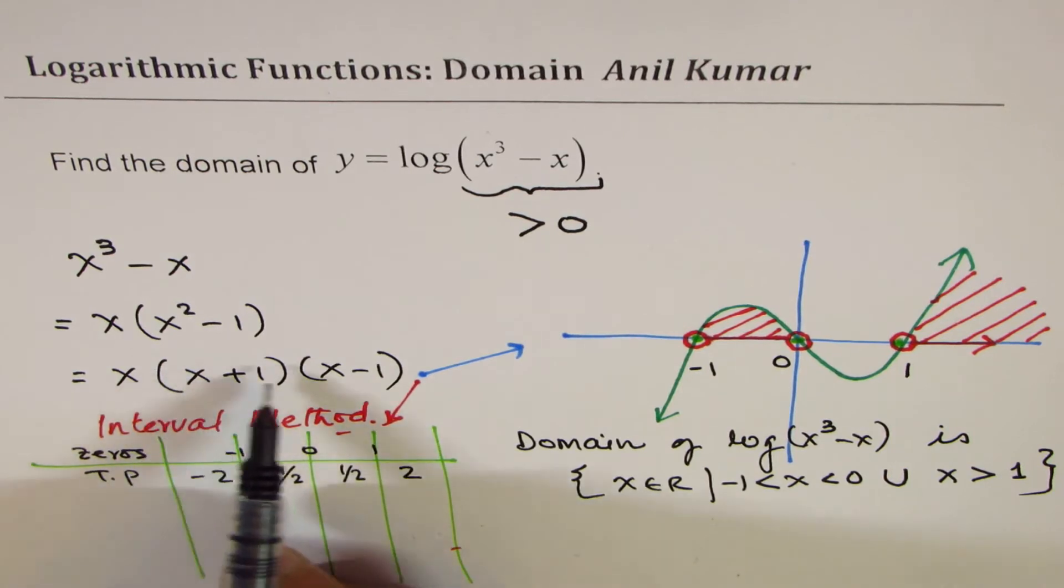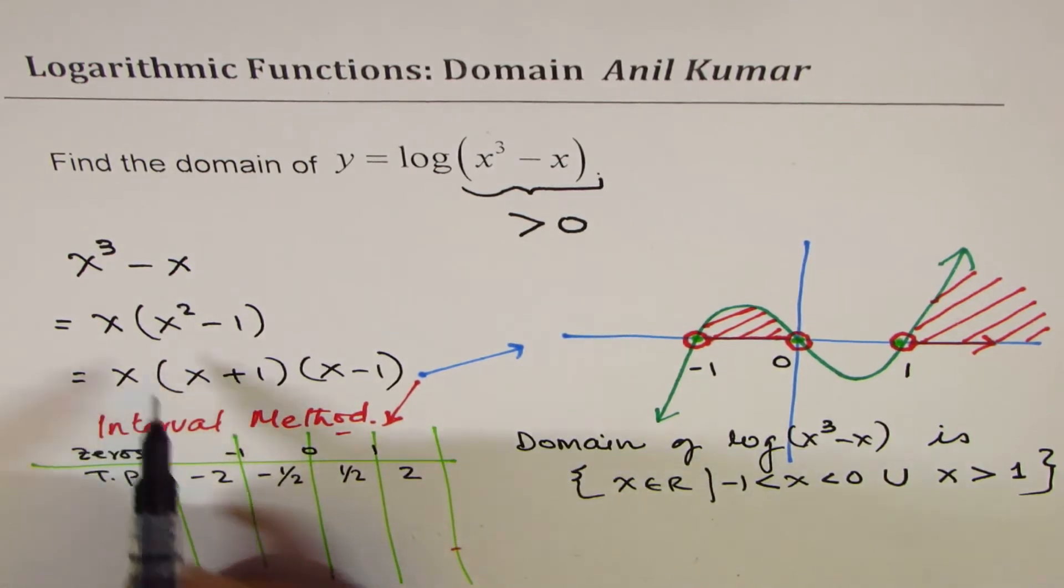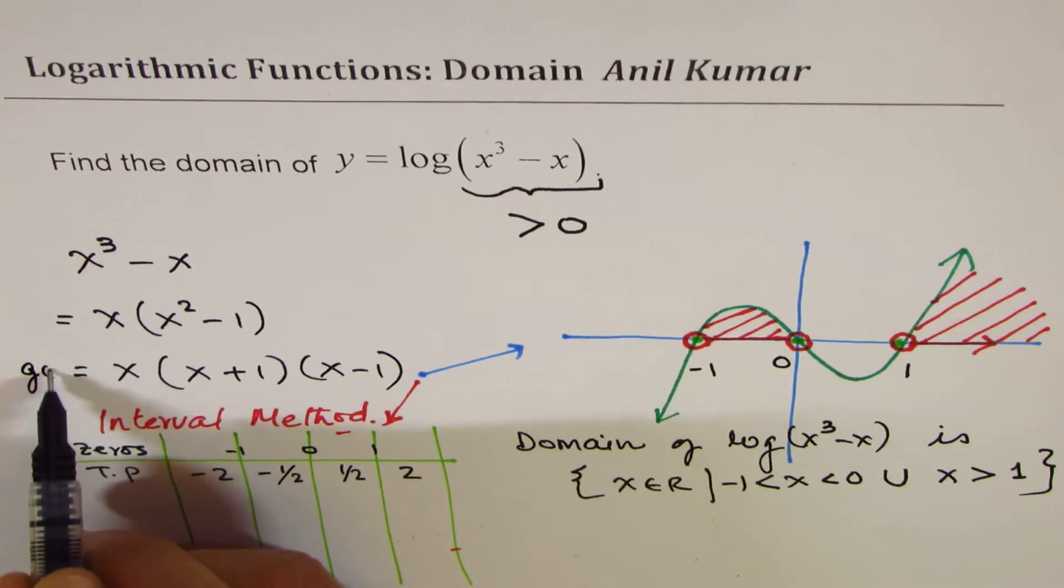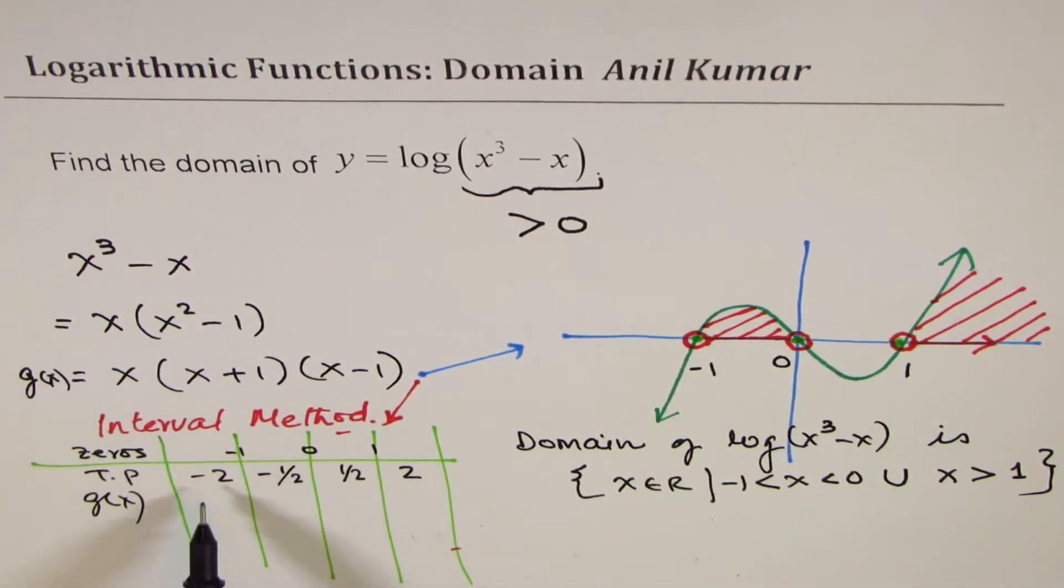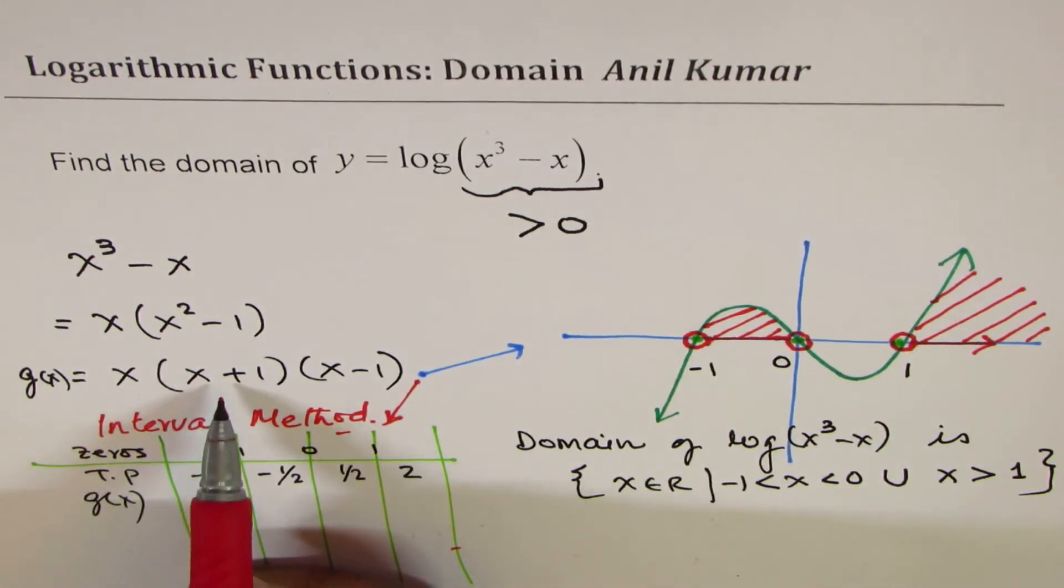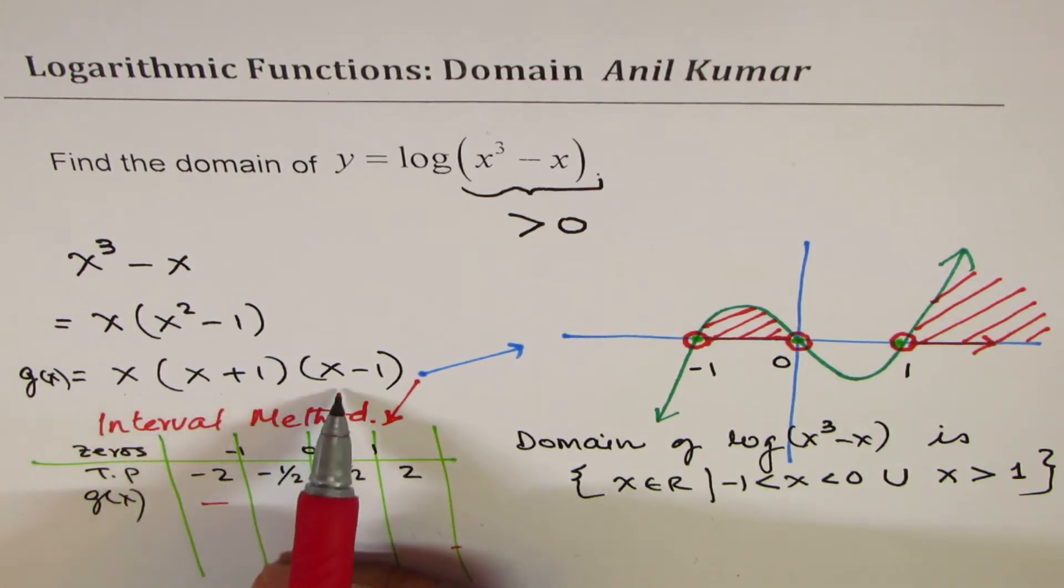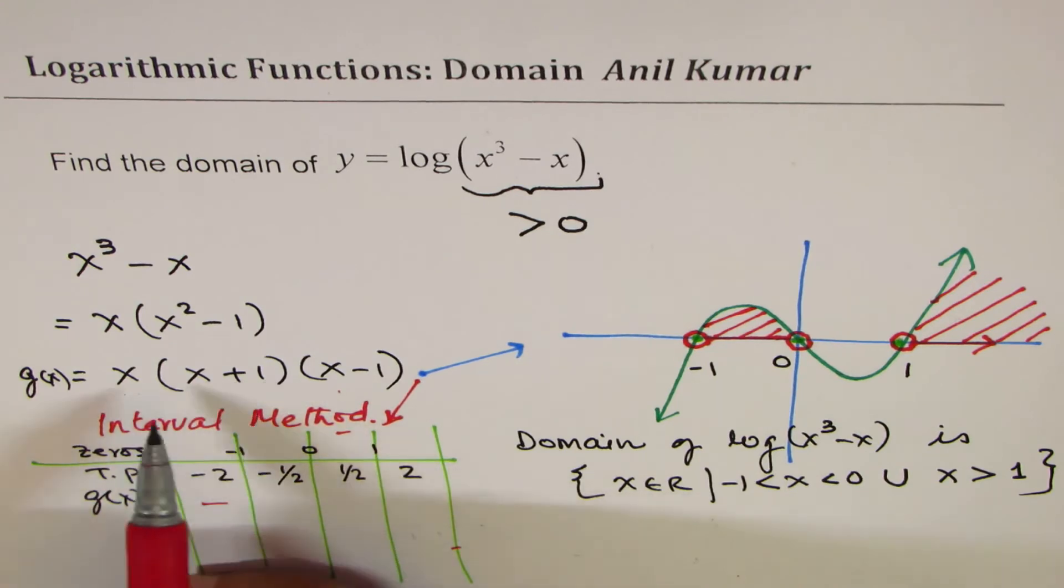If you substitute these values here, let's call this g(x). If I substitute -2 here, then all 3 will be negative. All 3 negative will mean I get negative in this interval. But if I substitute -1/2, in that case, this and that will be negative. -1/2 + 1 is positive. 2 negative means a positive here.